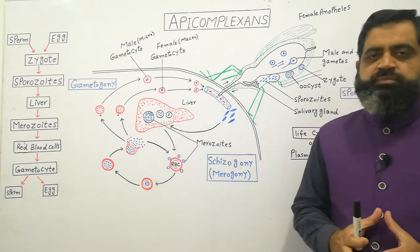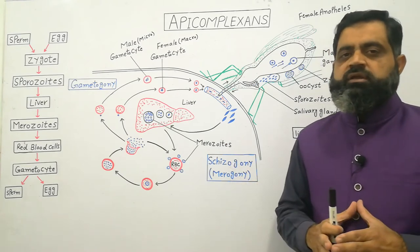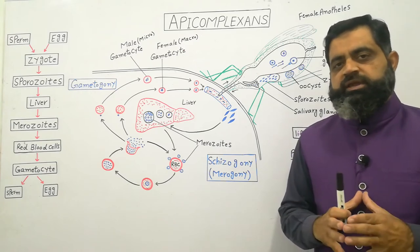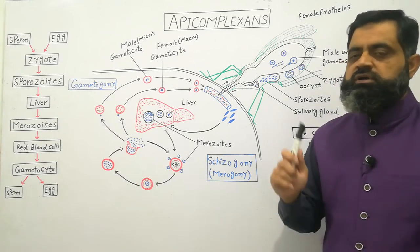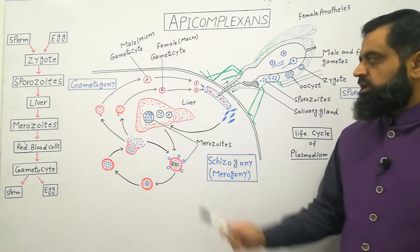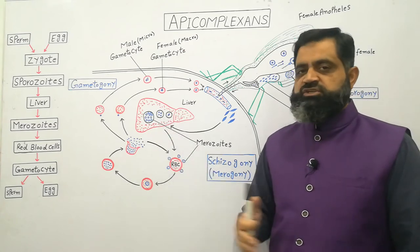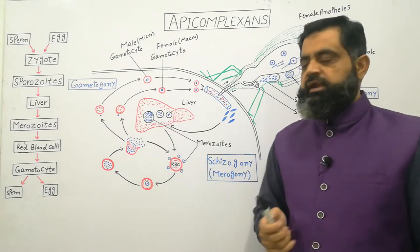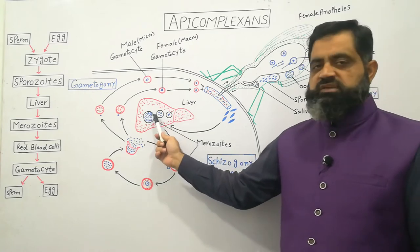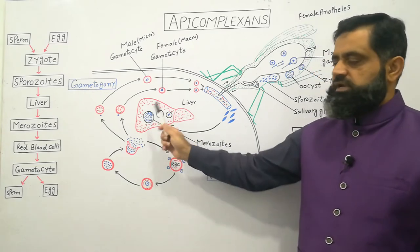In the liver, a process begins known as schizogony — 'schizo' means split. The sporozoites multiply inside the cells of the liver. This process is also known as merogony. Inside the liver cells, the sporozoites change shape and become merozoites, which then migrate back into the bloodstream.